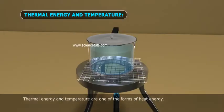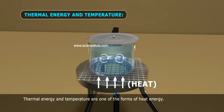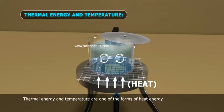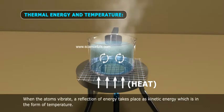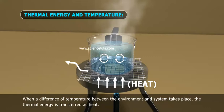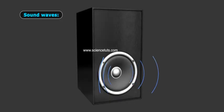Thermal energy and temperature. Thermal energy and temperature are one of the forms of heat energy. When the atoms vibrate, a reflection of energy takes place as kinetic energy, which is in the form of temperature. When a difference of temperature between the environment and system takes place, the thermal energy is transferred as heat.